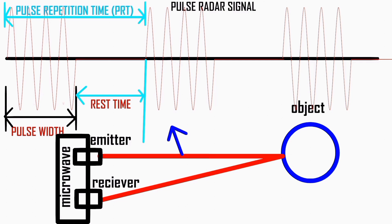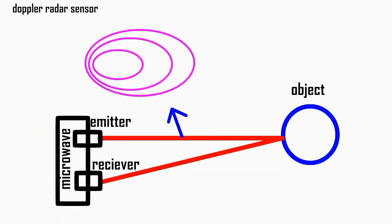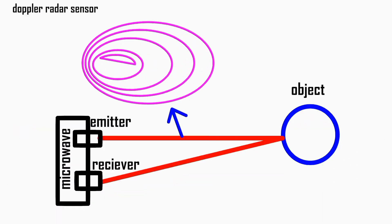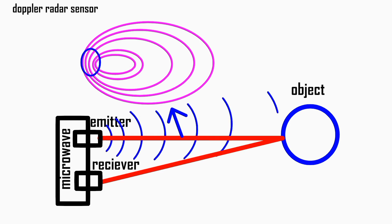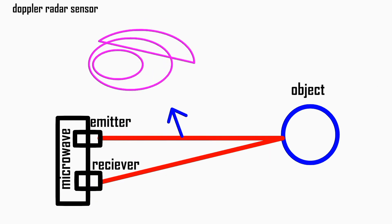There are also Doppler radar sensors. Doppler radar sensors focus on detecting the frequency shift of the reflected signal caused by movement of objects. They are often used in speed enforcement systems, weather monitoring, and sports applications.